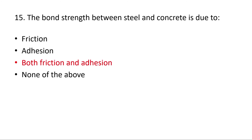Question 15: The bond strength between steel and concrete is due to both friction and adhesion. Both friction and adhesion are affected by the properties of steel and concrete, including relative movement due to volume changes such as concrete shrinkage. So the answer is both friction and adhesion.